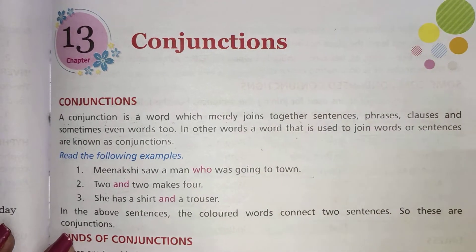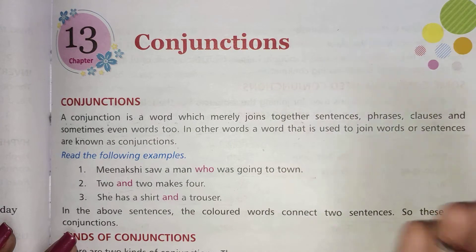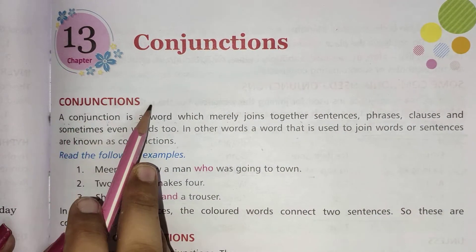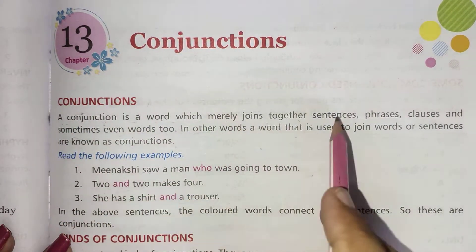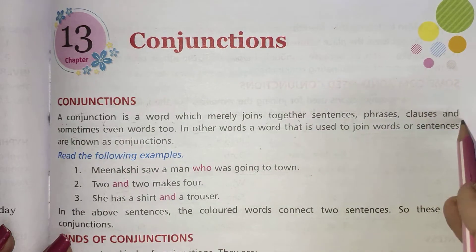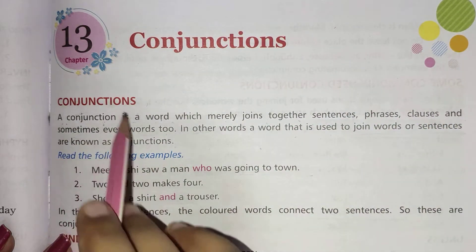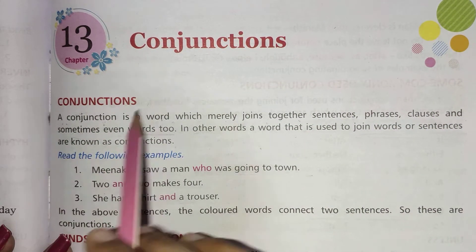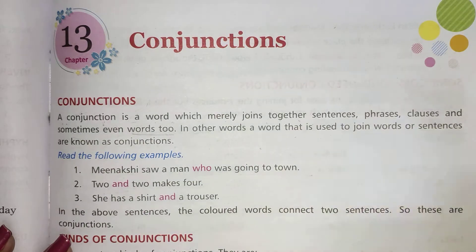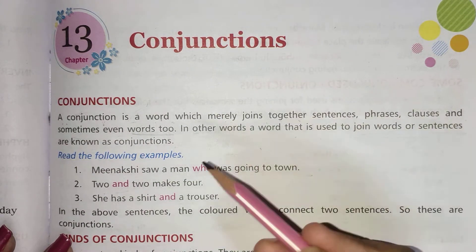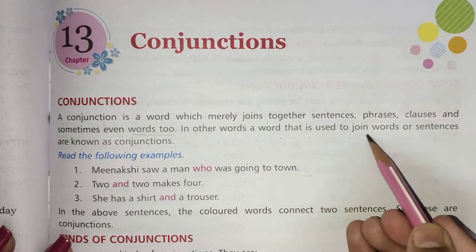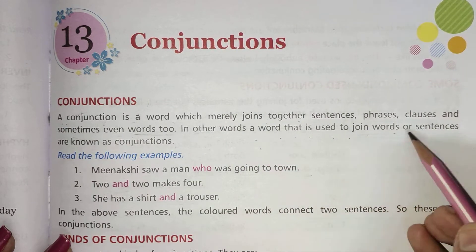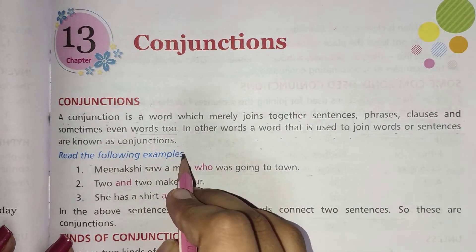So let's talk about conjunctions. What are conjunctions? A conjunction is a word which merely joins together sentences, phrases, clauses, and sometimes even words too. In other words, a word that is used to join words or sentences is known as a conjunction.